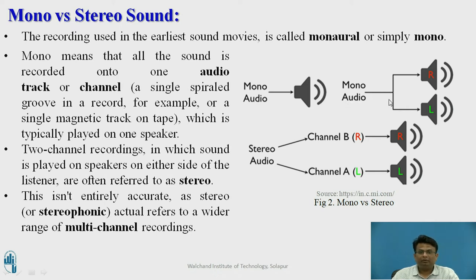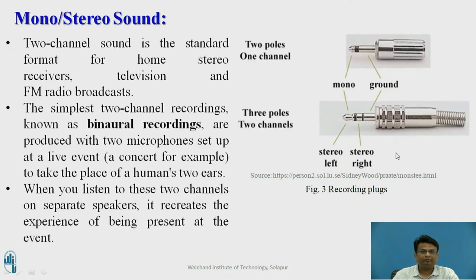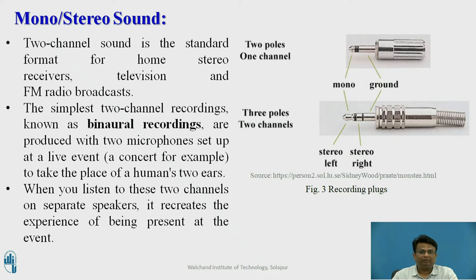If you send mono audio to two speakers, both speakers will play the same audio. In case of a two-channel or stereo recording, the sound is played on both sides. Two separate audio channels are recorded, and when played on two speakers they will sound different, recreating the experience of being present at a live event.